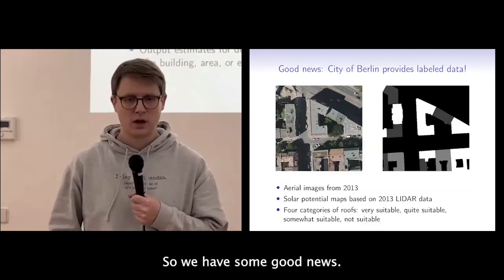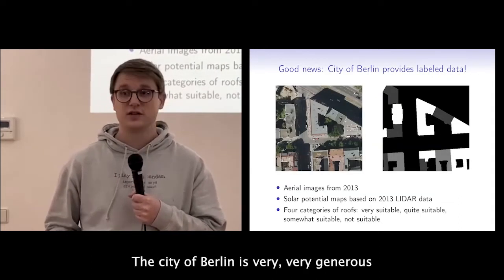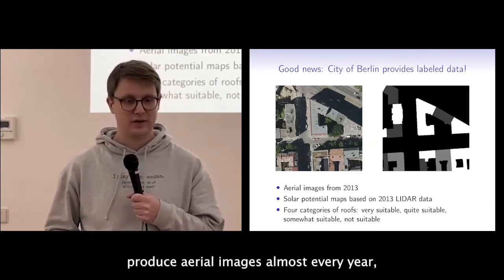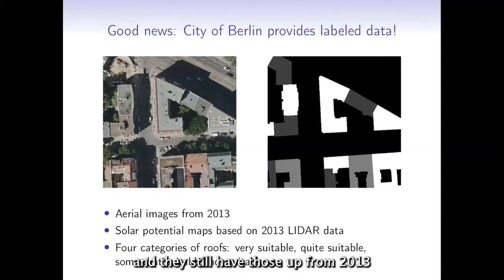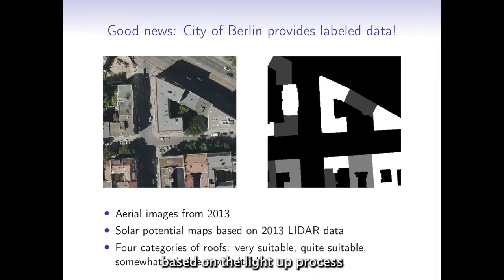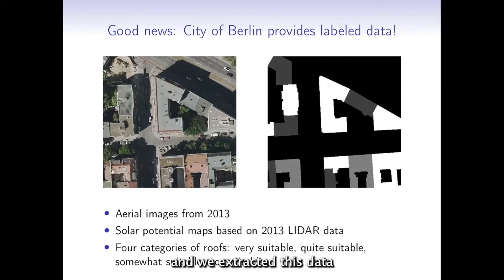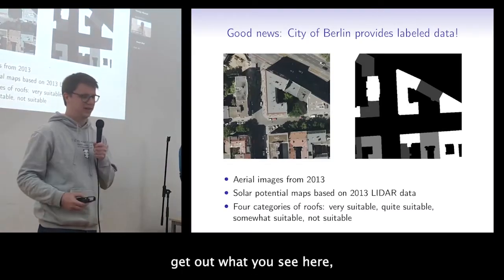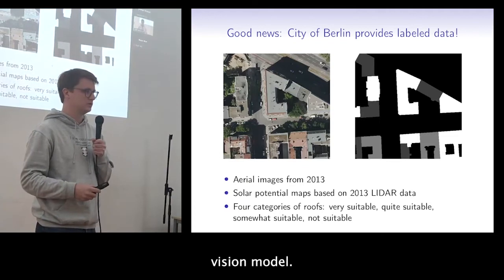The city of Berlin is very generous with their open data. They produce aerial images almost every year, still have theirs from 2013, and also produced a solar potential map that year using the LiDAR process. We extracted, converted, and combined this data — by equal use of Python code and a lot of cursing — to produce labeled data for a computer vision model.